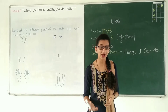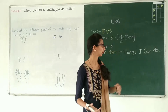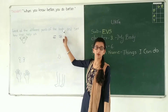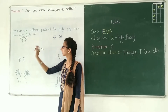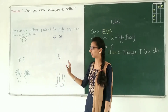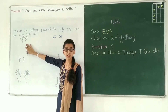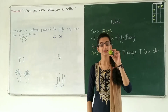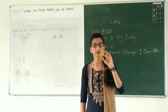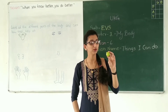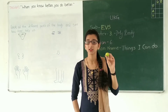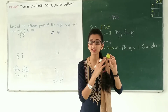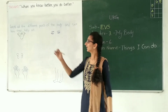In the last session I taught you parts of legs. Now I am going to teach you things I can do. Now look at this photo. Look at the different parts of the body and see how they help us. I have drawn some body parts here. Look at this first picture — this is our tongue. Now tell me, what is this? This is a lemon. Have you licked the lemon? How is its taste? How do we recognize the taste of lemon — with the hand or our tongue?